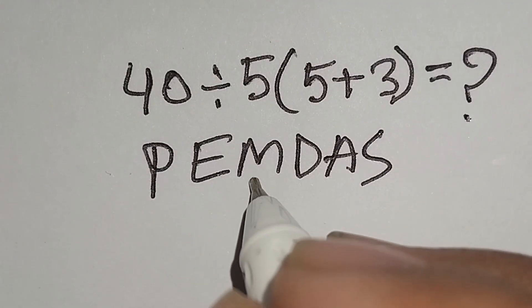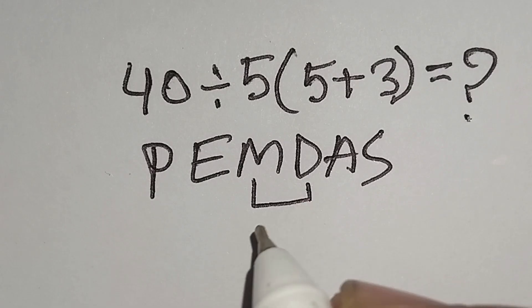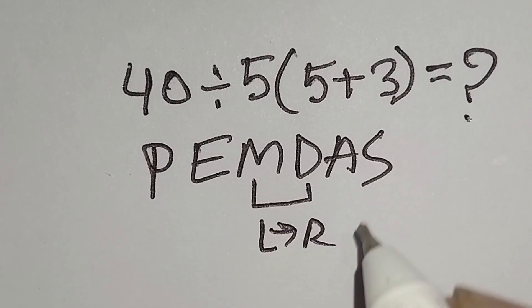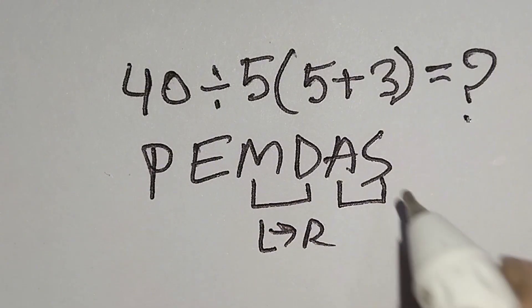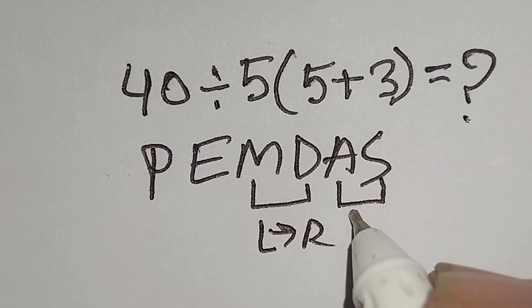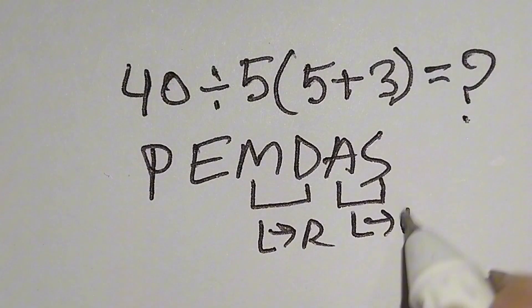Remember, multiplication and division have same priority. For this we have to work left to right. And addition and subtraction have same priority. For this we have to work left to right also.